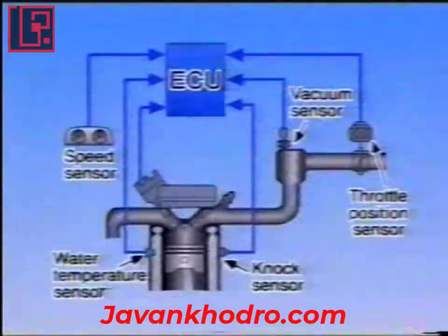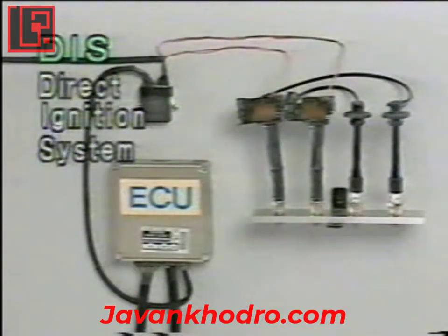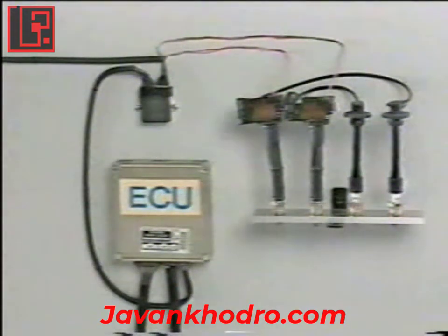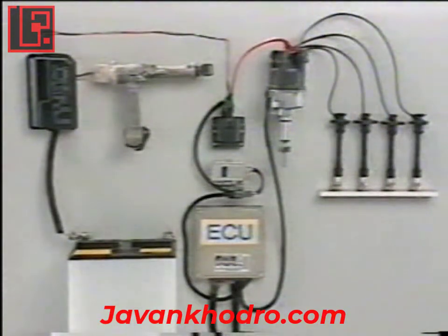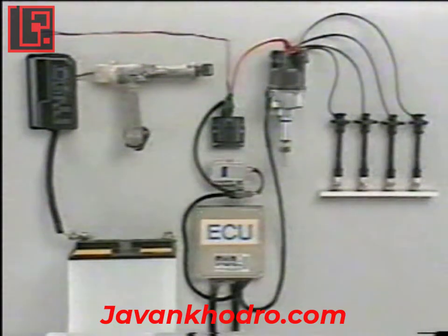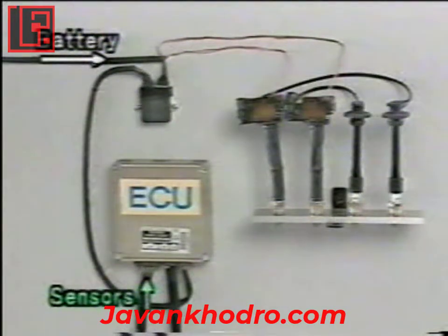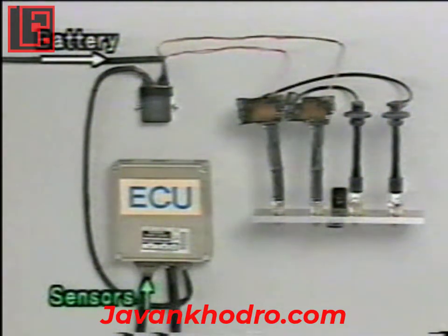Next, let's take a look at a direct ignition system, or DIS. Conventional ESA generated a high voltage with one ignition coil and sent the voltage to each spark plug with the distributor. But a DIS transmits ignition signals to multiple ignition coils and distributes the power from the ignition coil directly to the spark plugs.